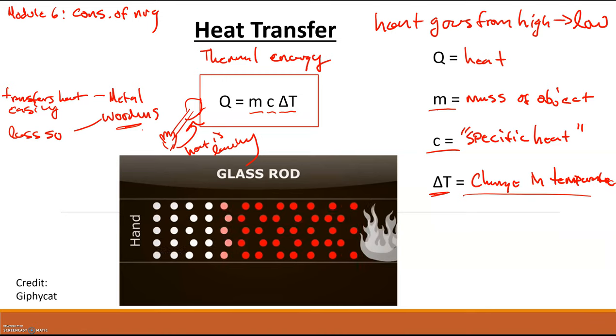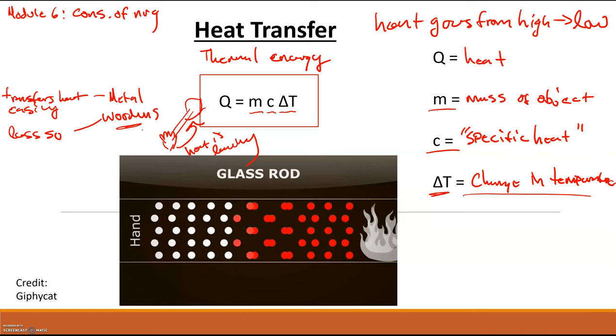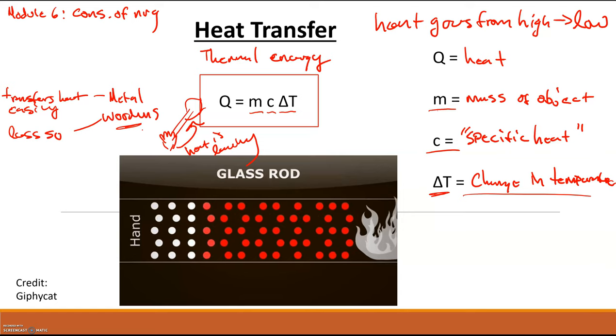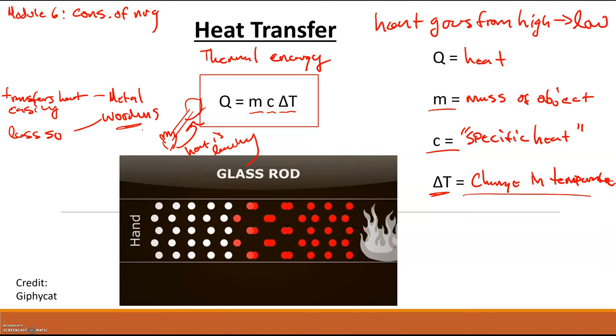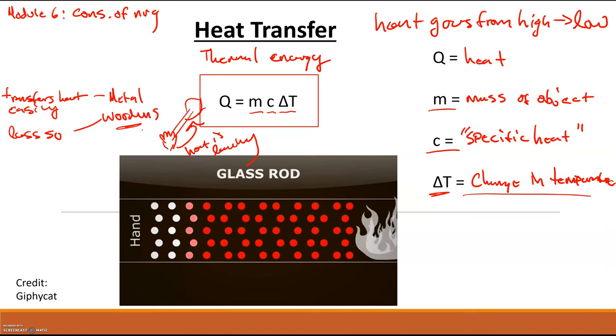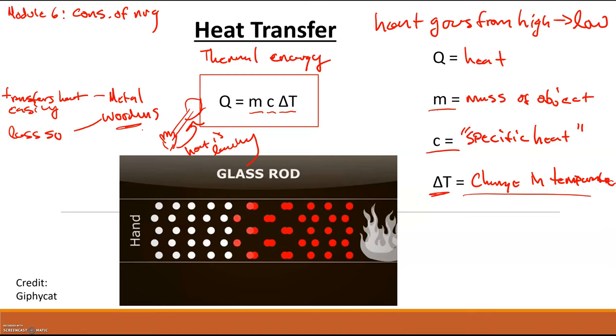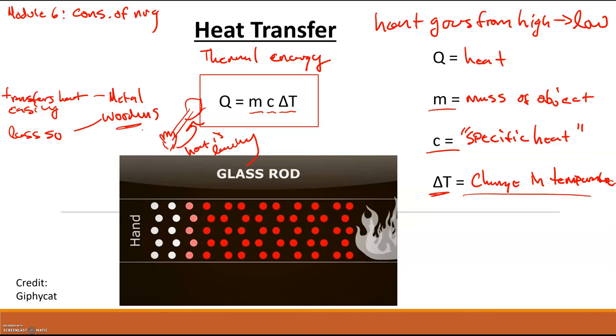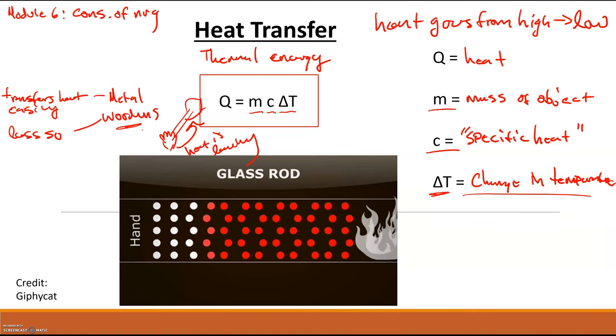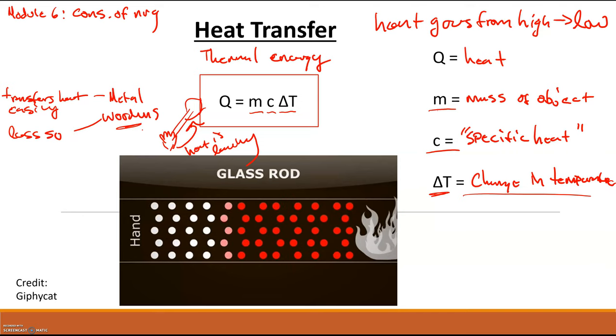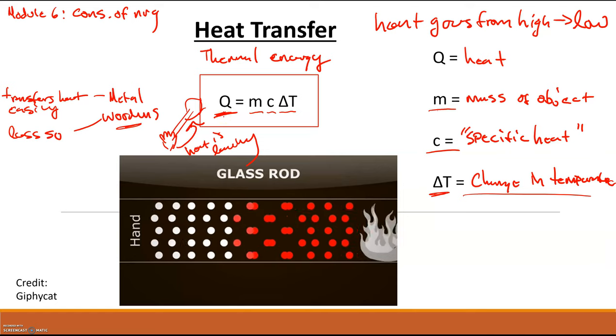So this is similar to how momentum was, where our conception of momentum is we look at a dump truck or a tractor trailer driving down the road and we say, man, that thing has a lot of momentum. What we're really thinking is, man, that has a lot of mass. That's a really big vehicle. So this is where our everyday language broke down in that scenario, where momentum is actually the mass and the velocity combined, not just something that's very massive. Same sort of thing here is that we think of things being hot or cold in terms of temperature when, in fact, we need to think about them in terms of heat from a physics standpoint.